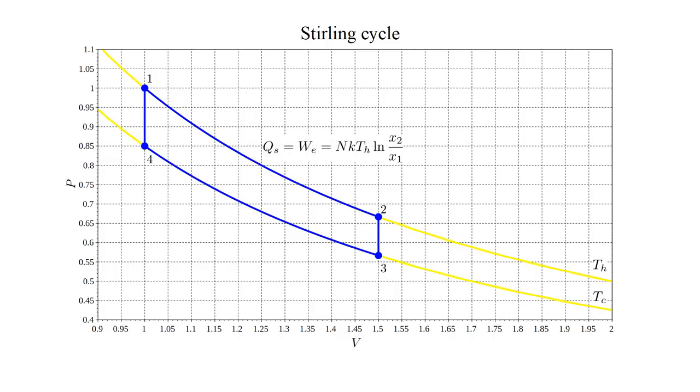During the transition from state 1 to state 2, heat energy QS is delivered to the system and converted to work WE delivered to the environment, both equal to NKT hot natural log X2 over X1.